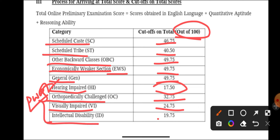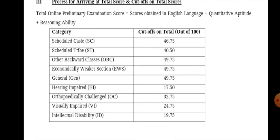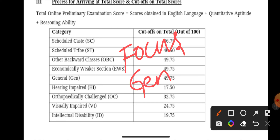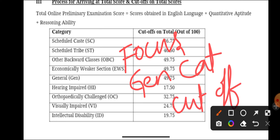Intellectual Disability 19.75. So this is the official cutoff. Whenever I discuss the cutoffs of any exam, whether prelims or mains, I always tell you to always focus on the general category cutoff. Your target should be on the general cutoff.